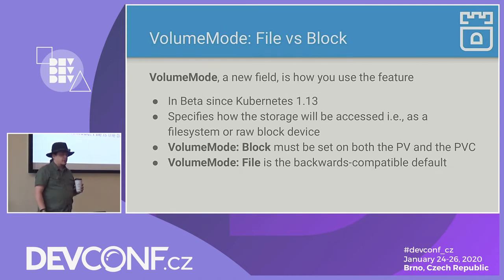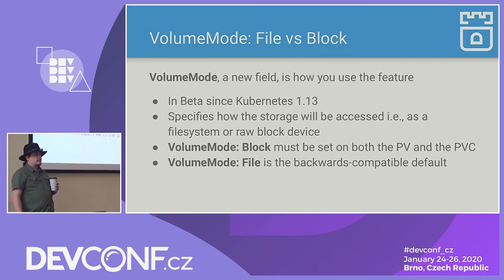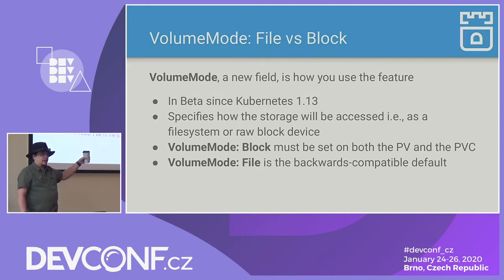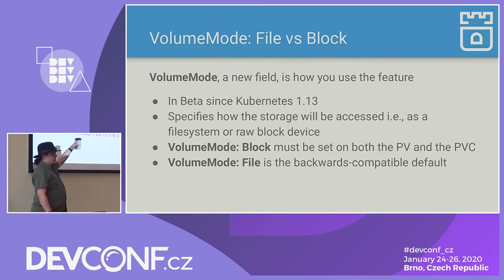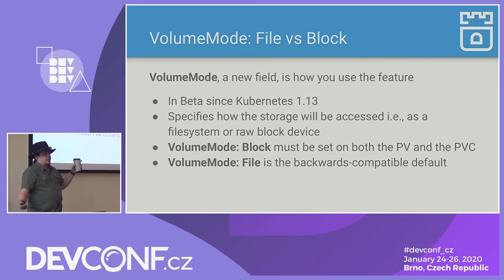To make this work, Kubernetes introduced a new field into the persistent volume spec called volume mode. It's been in beta since Kubernetes 1.13 — and it's still beta as of 1.18, but we'll get there. This field specifies whether it'll be in mode block or mode file. Both the PV and the PVC have this field and they must match. When doing dynamic provisioning, you create a PVC with volume mode block and that must go to a storage class that supports volume mode block, which will provision a PV that is also volume mode block. The default is volume mode file, which was kept to preserve backwards compatibility.